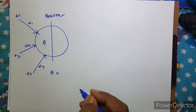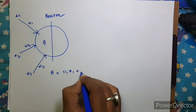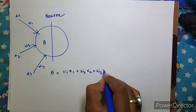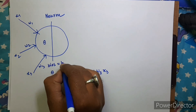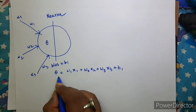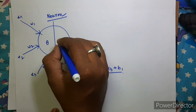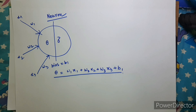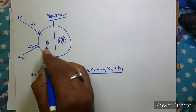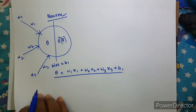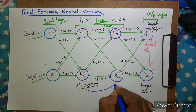Let's say theta is the dot product of all the inputs with their weights, so: w1·x1 plus w2·x2 plus w3·x3, and if there is any bias we need to add it, plus b1. This is the input for this particular neuron. Now if there is any activation function — let's say the activation function is sigmoid — the output would be sigmoid of this input. In our case you can see the activation function is sigmoid for all the layers.